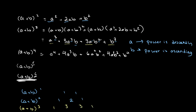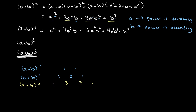And for a plus b to the fourth power, the coefficients are 1, 4, 6, 4, 1. Some of you may already see the pattern that's happening here.